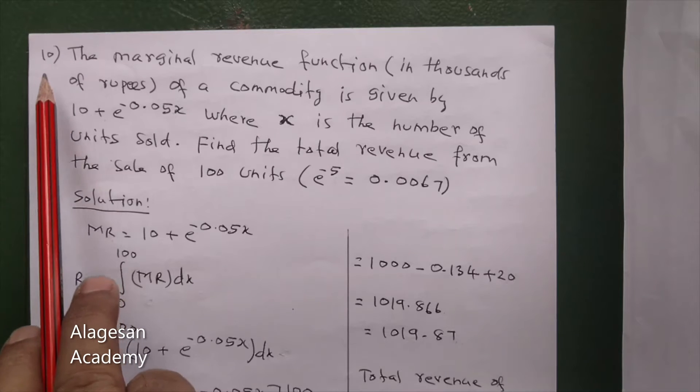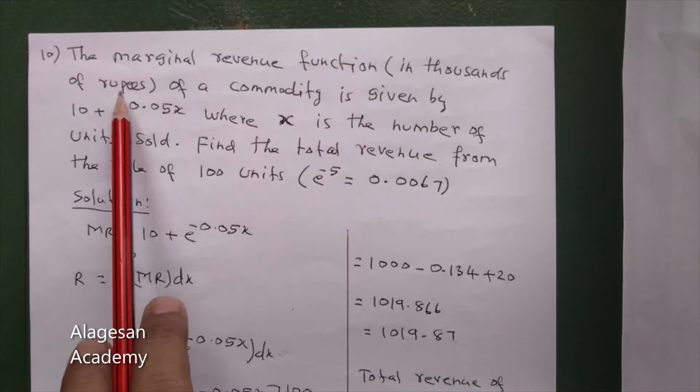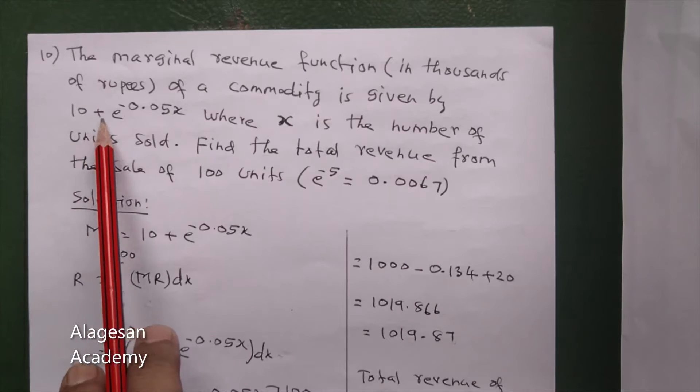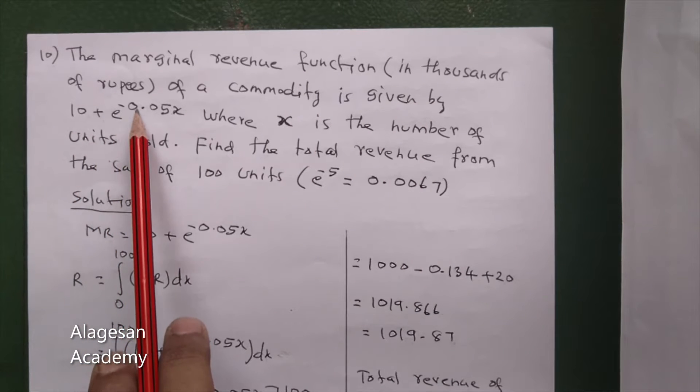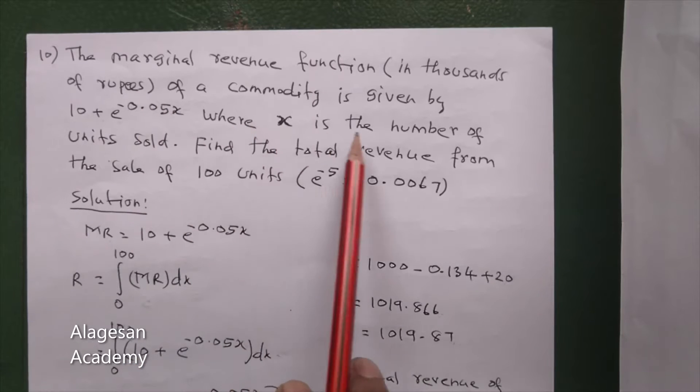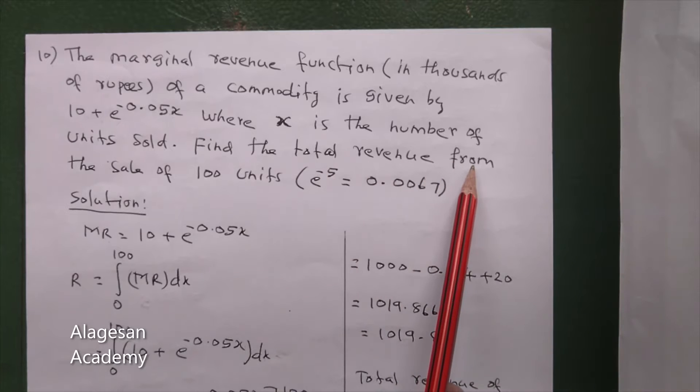Hi students, see question number 10. The marginal revenue function in thousands of rupees of a commodity is given by 10 plus e power minus 0.05x, where x is the number of units sold. Find the total revenue from the sale of 100 units.